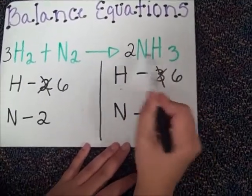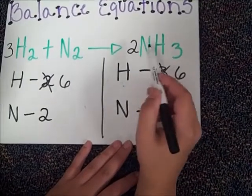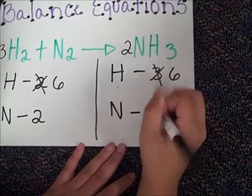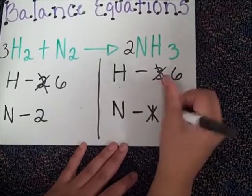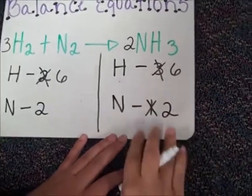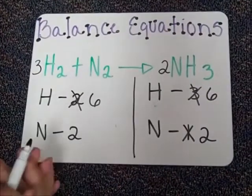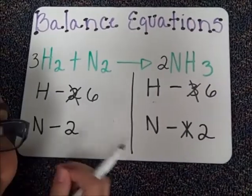And then since I did 2 times 3 equals 6, you still have to do this number. So you do 2 times 1, and that'll make it a 2. And this one's already a 2, and there's your balanced equation. Thank you.